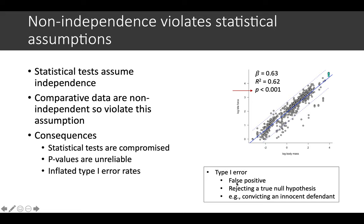I mentioned Type I error before, but that's a case where it's called a false positive, so it's rejecting a true null hypothesis. An example of this is like convicting an innocent defendant, so you're making an error in your statistics. That could happen if you don't account for the non-independence.